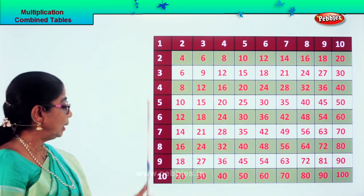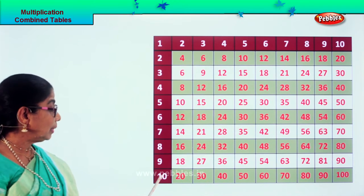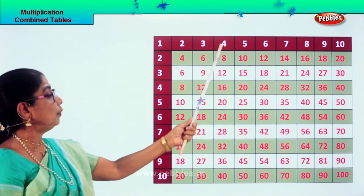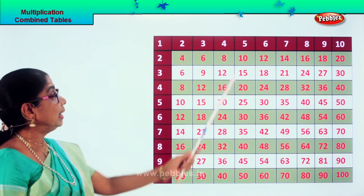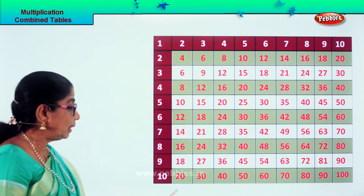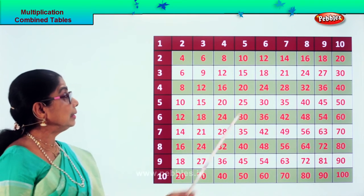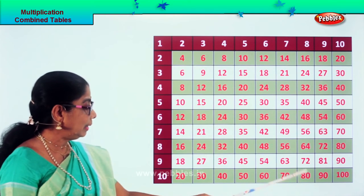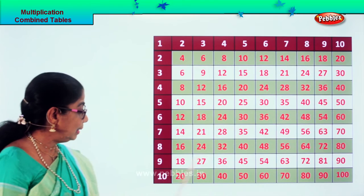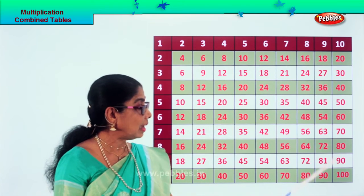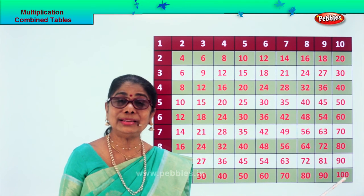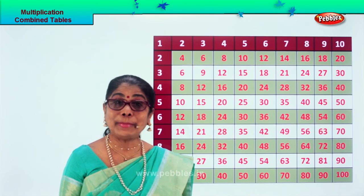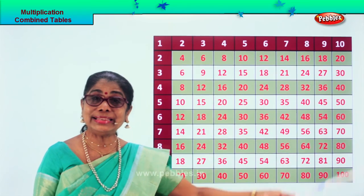Now this way: ten ones are ten, ten twos are twenty, ten threes are thirty, ten fours are forty, ten fives are fifty, ten sixes are sixty, ten sevens are seventy, ten eights are eighty, ten nines are ninety, and ten tens are one hundred. So you learn two ways of saying, looking at and seeing the multiplication tables, two to ten — isn't it lovely?